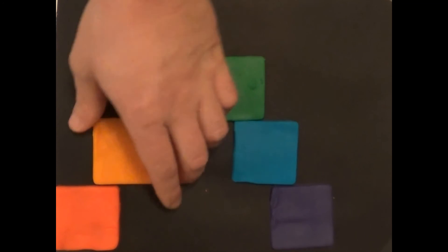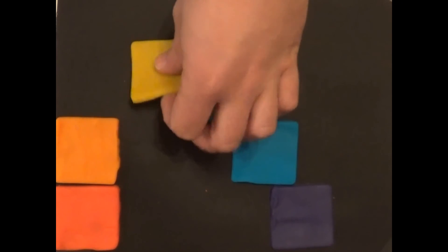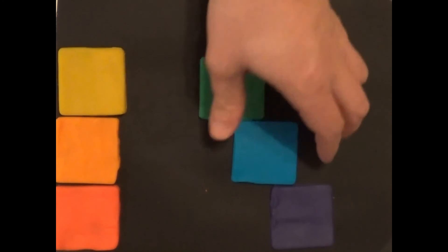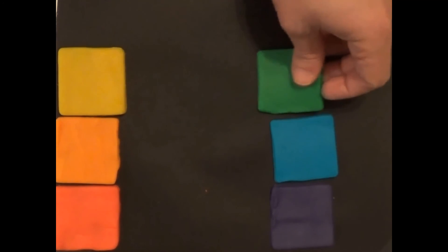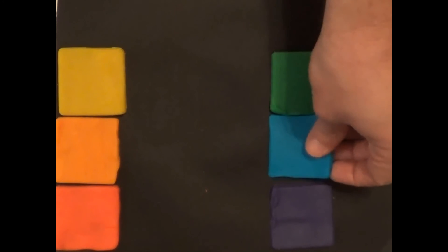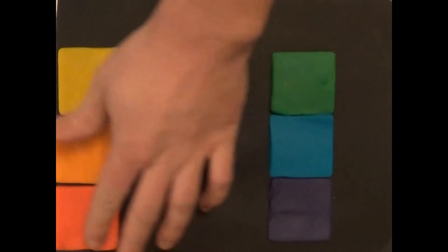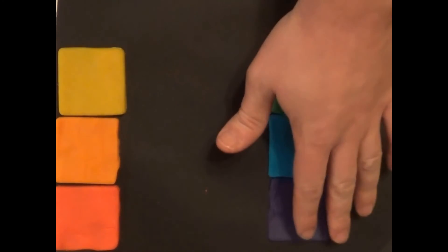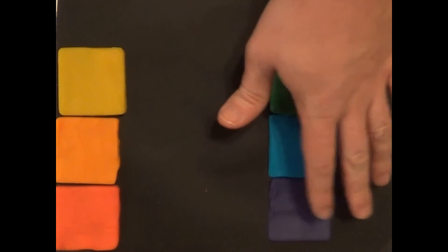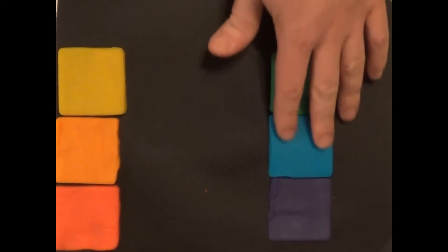And they also form two different sets of colors. On the left side, we have red, orange, and yellow. These are warm colors. On the right side, we have purple, blue, and green. These are the cool colors.